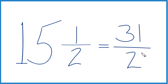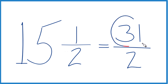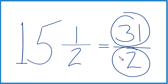31 halves — that's the improper fraction for the mixed number 15 and 1 half. Let's do that again. 15 times 2 is 30. 30 plus 1 is 31. That's the numerator. Bring the 2 across — that's our denominator. And you got it.